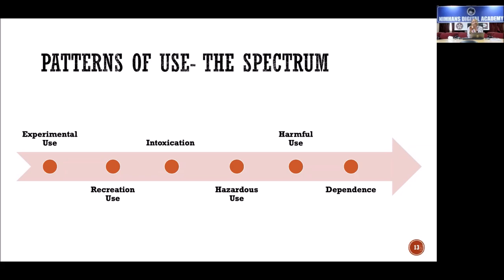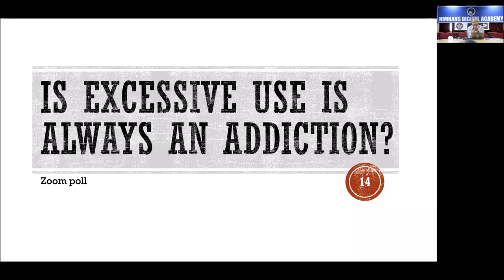Dependence is very difficult to manage, and outcomes are not very promising because you are looking at the end of the spectrum. The reason for this training and its mission and vision is: can we prevent people from reaching dependence? Can we help them early, prevent them from developing this condition and make them much better? Early intervention is key.